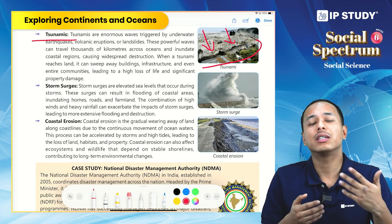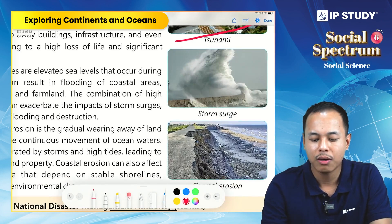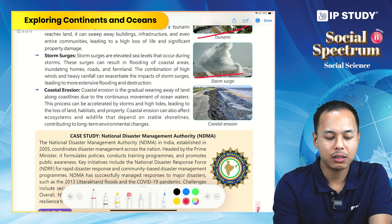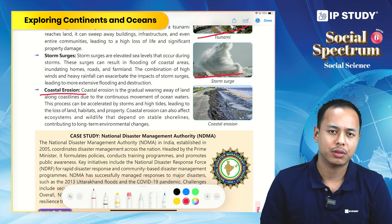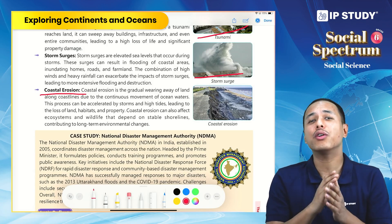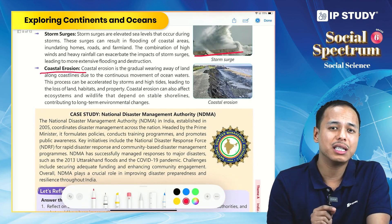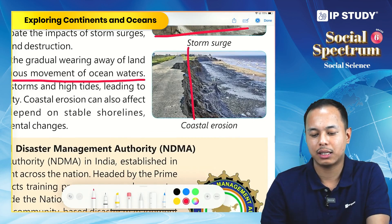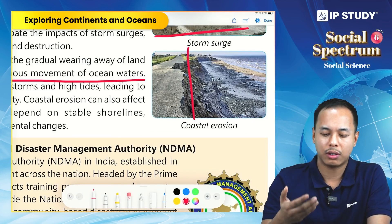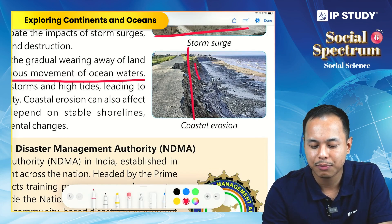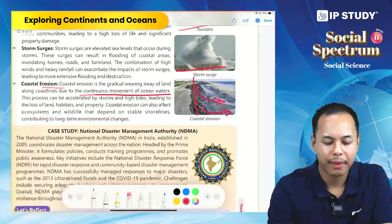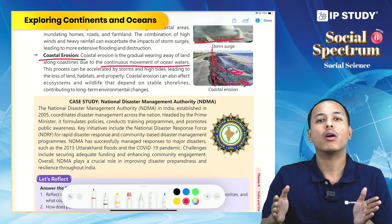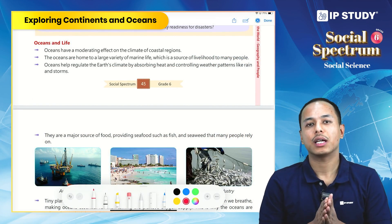Tsunamis result in powerful waves that flood coastal regions. Coastal erosion is the gradual wearing away of land caused by the continuous movement of ocean water. The continuous action of waves erodes the shoreline over time. Coastal erosion can affect ecosystems and wildlife and erode our shoreline.